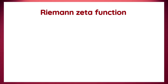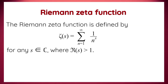To start with, we quickly review the definition of the Riemann zeta function. A Riemann zeta function, denoted as zeta(s), is defined for any complex variable s as zeta(s) equals the sum from n equals 1 to infinity of 1 divided by n raised to the power of s, where the real part of s is greater than 1. Apart from an infinite sum, it can also be expressed as an integral and as an infinite product, which is more importantly known as the Euler product formula.